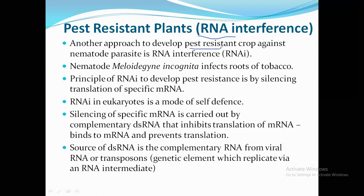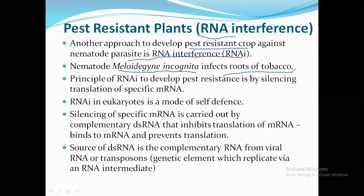RNA interference is specifically used for a kind of nematode called Meloidogyne incognita. Meloidogyne incognita is a parasitic nematode belonging to a phylum of worms which infects the roots of the tobacco plant. The growth of the plant reduces as a result of this infection.